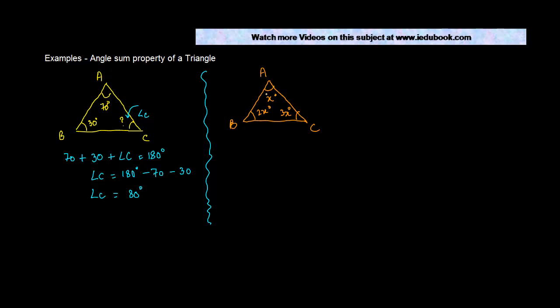So basically, one angle is whatever degree it is, the second angle is twice the first one, and the third angle is thrice the first one. This is also fairly easy. We know that the sum of all these three has to be 180.